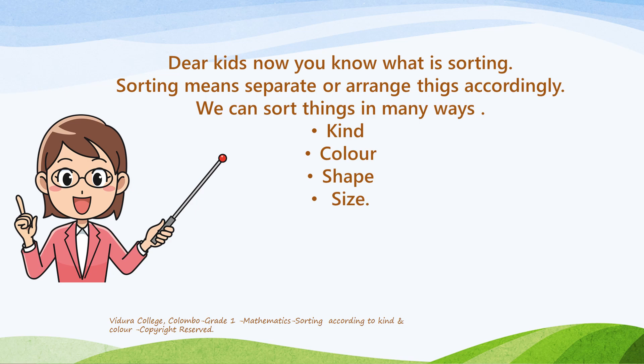As I told you earlier, today's lesson is sorting. Sorting means to separate or arrange things accordingly. We can sort things in many ways: we can sort according to kind, according to color, according to shape, and according to size. In today's lesson, I'm going to teach you more about sorting according to kind and color.